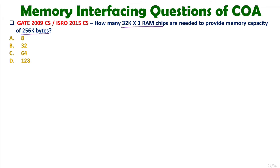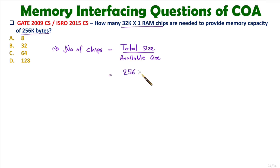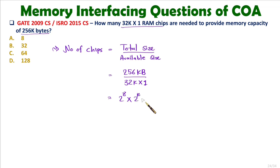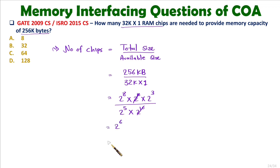Total size divided by available size. Total size is 256KB divided by available size 32k×1. So 256k means 2^8 × 2^10; B means 2^3. Divided by 32 means 2^5, k means 2^10. The 2^10 cancels out. In the numerator 8+3 gives 2^11, divided by 2^5 gives 2^6, which is 64. So 64 chips are needed to build this size of memory.